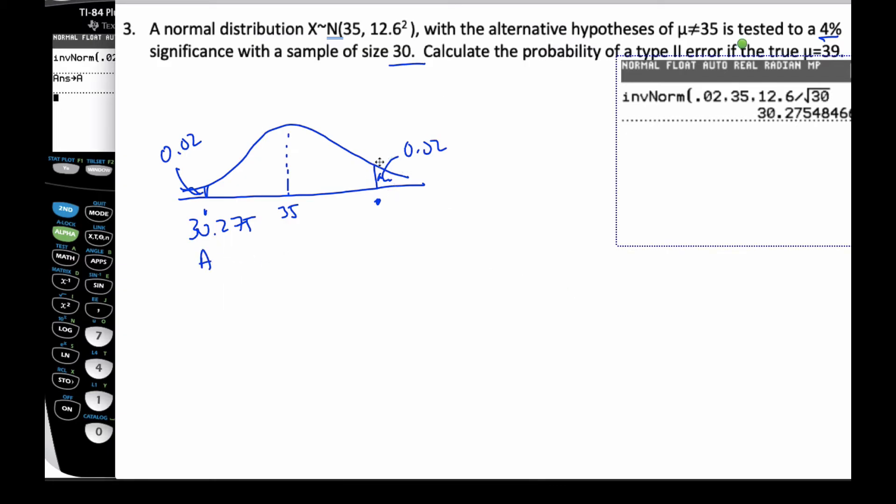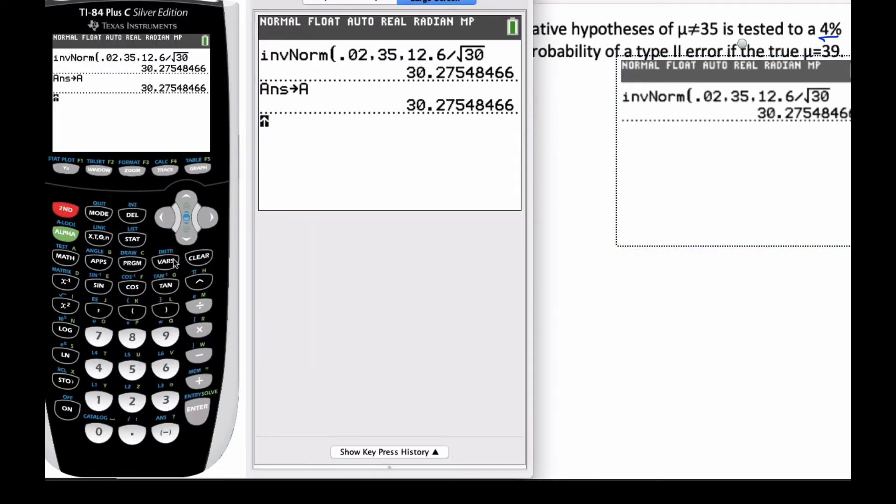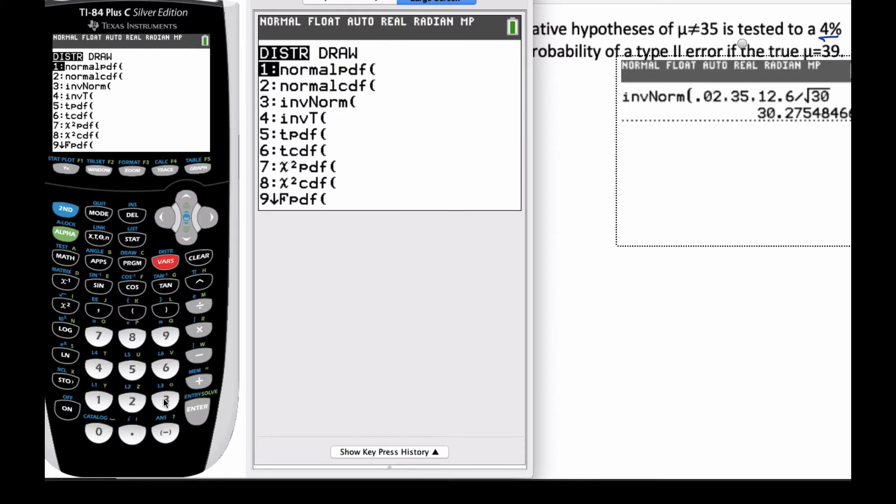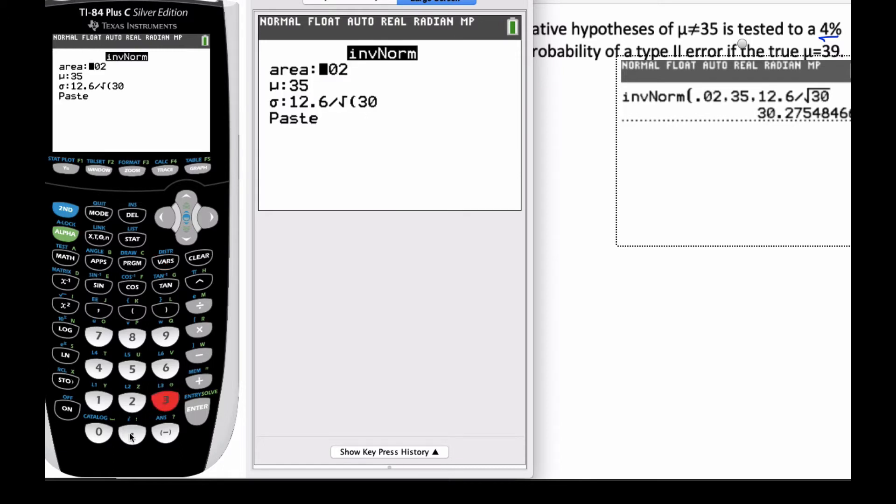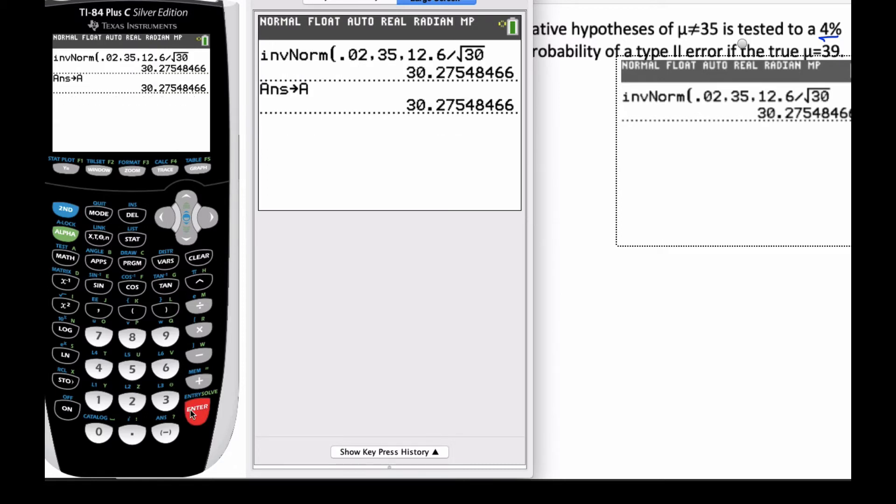I'll do the same thing here for this side. I'm going to go to my distributions, inverse normal. But here I'm going to go 0.98, I want the other side. The calculator works from left to right.